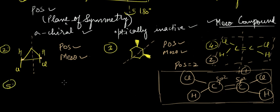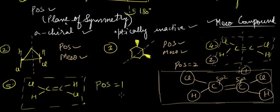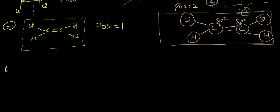In the fifth example, the compound has only one plane of symmetry, which is horizontal. A vertical plane would not apply because Cl is on one side and H on the other. So the number of planes of symmetry in this case is one.